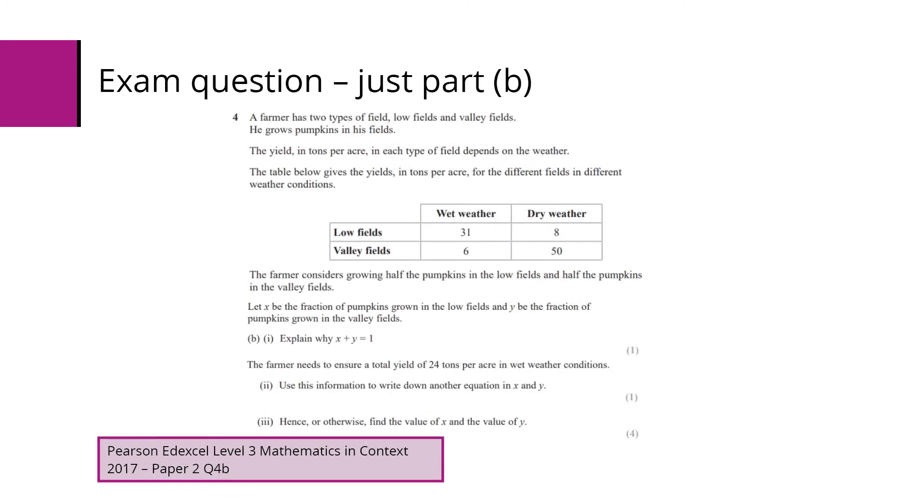So here we've got another exam question. This is from 2017, question 4. Let's look at part B. A farmer has two types of field, low fields and valley fields, and he grows pumpkins on these fields. The yield in tonnes per acre in each type of field depends on the weather. The table gives the yield for wet weather and dry weather. The farmer considers growing half the pumpkins in the low fields and half the pumpkins in the valley fields. Let x be the fraction of pumpkins grown in the low fields and y be the fraction of pumpkins grown in the valley fields.